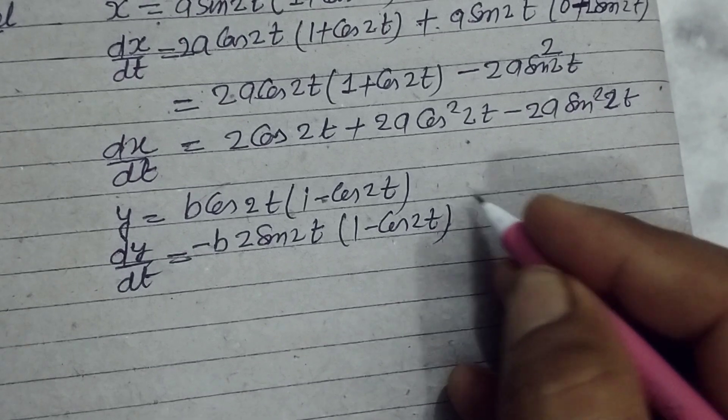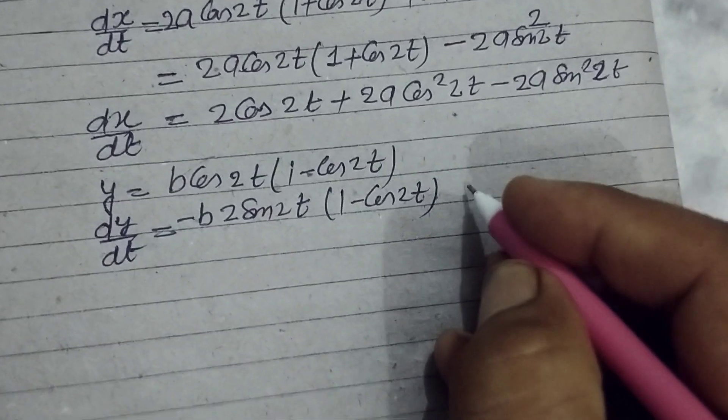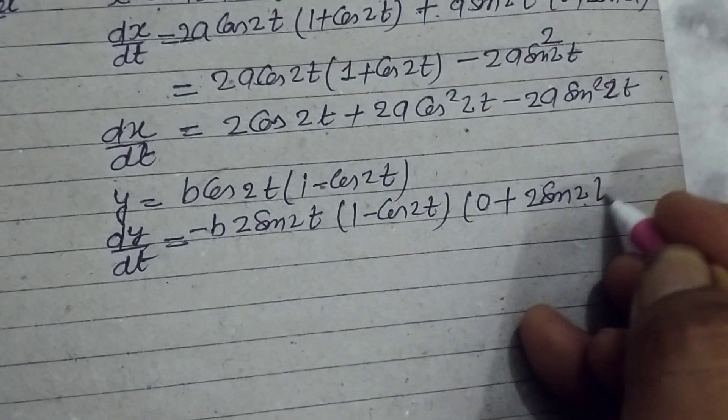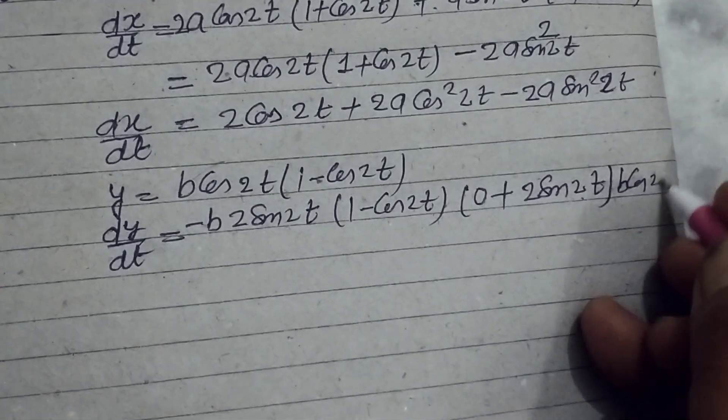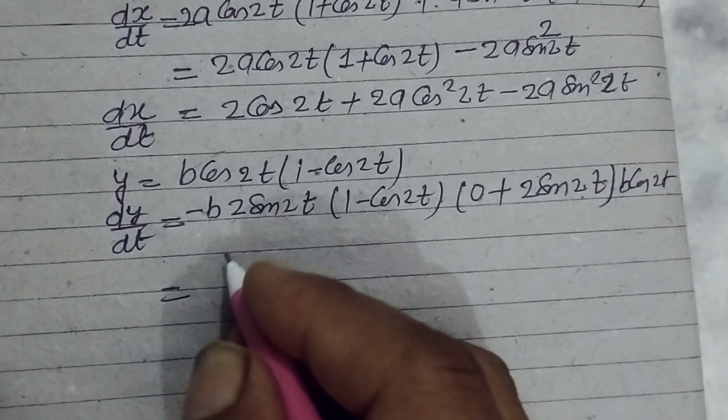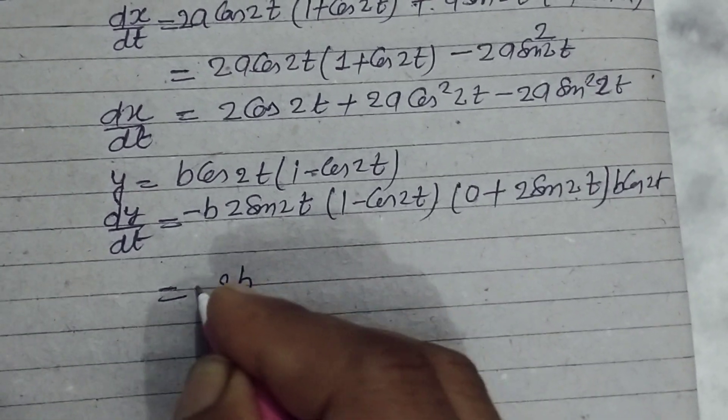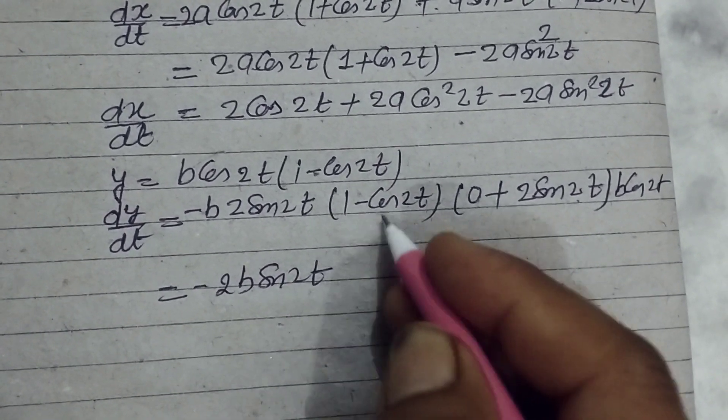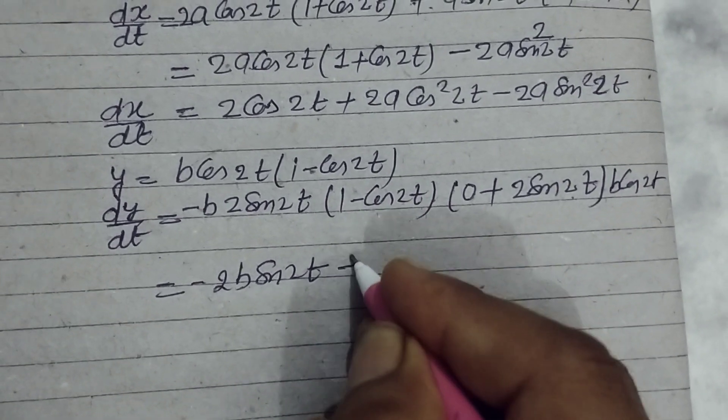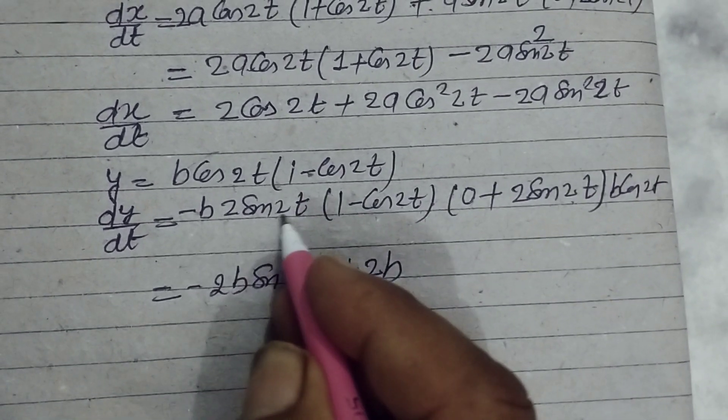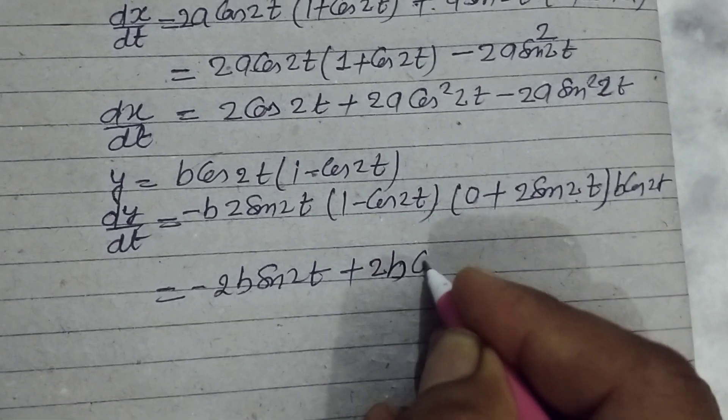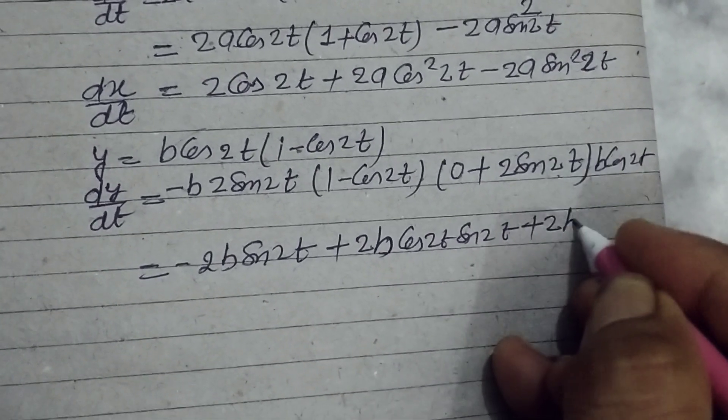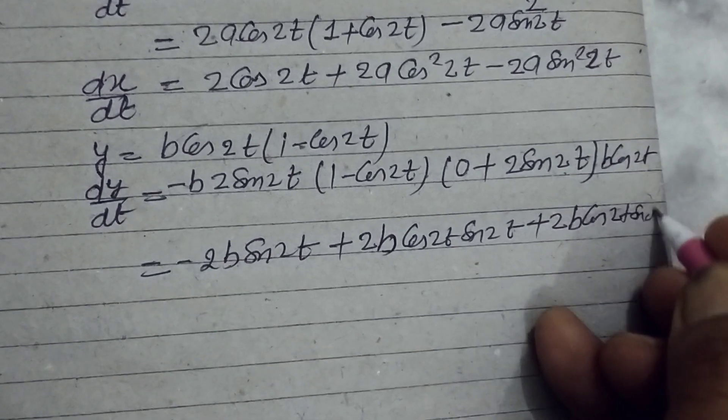Now we take the differentiation of (1 - cos 2t), which is 0 + 2 sin 2t times b cos 2t. So here we have -2b sin 2t (1 - cos 2t) plus 2b cos 2t sin 2t. This gives -2b sin 2t + 2b sin 2t cos 2t + 2b cos 2t sin 2t.